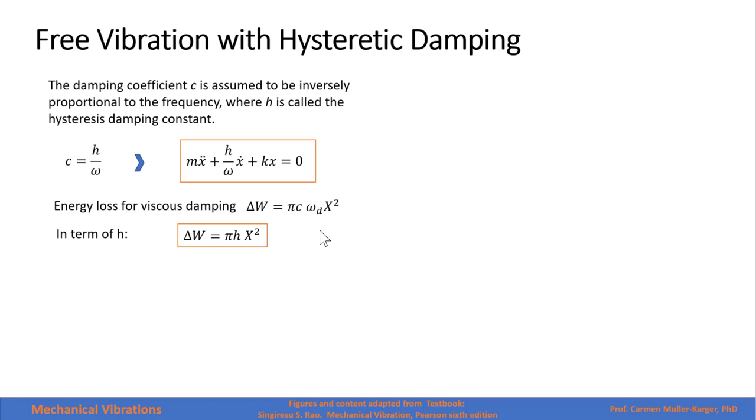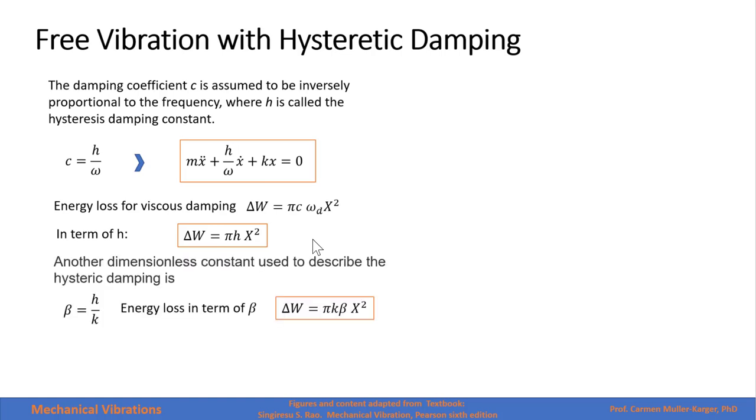Another dimensionless constant used to describe the hysteresis damping is β. β is equal to H over K.